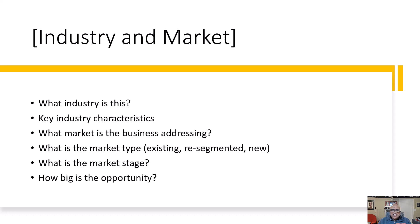Next, you want to address the industry and the market. What industry is this business addressing, and what are some of the key industry characteristics? What market is the business pursuing? What is the market type — is this an existing market, is the business trying to segment an existing market, or is it trying to create a new market? What is the market stage — early, growth, mature, or declining? And how big in dollars is the opportunity this business is addressing?